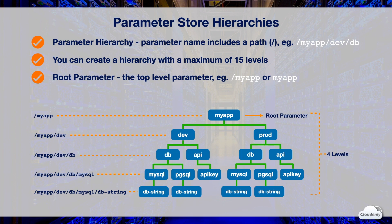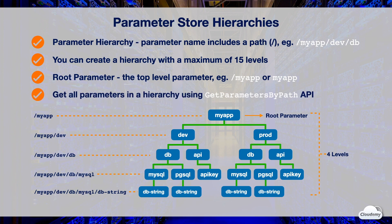Using parameter hierarchies makes it easier to manage parameters for different environments and projects. This helps you identify the correct parameters for each environment and avoid creating multiple parameters with the same configuration data. Parameter hierarchies also enable you to retrieve all parameters under a specific sub-path using the GetParametersByPath API. For example, you can get all parameters under MyApp/dev by calling the GetParametersByPath API.